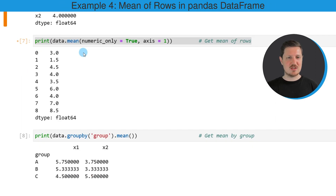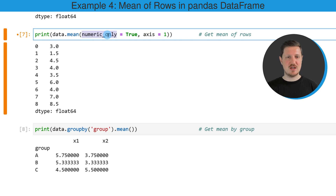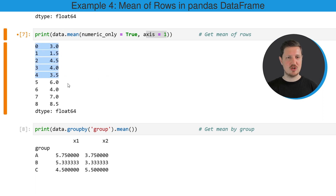In the next step, it's also possible to calculate the mean value by row, and this is what we are doing in the seventh code snippet. We are once again using the mean function, specifying that we want to consider only the numeric columns, and also specifying the axis argument to be equal to 1 to tell Python that we want to calculate the mean by row. As you can see, this output shows the mean value for all numeric columns in our data frame by row.